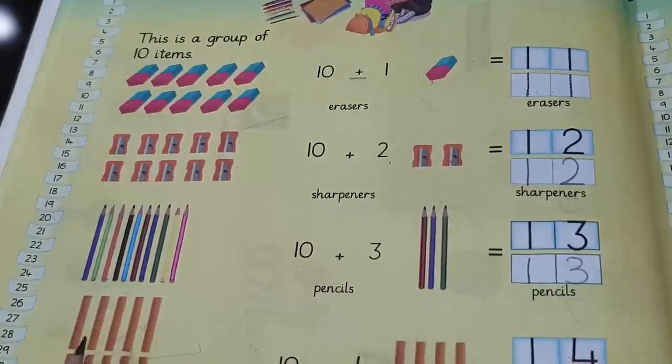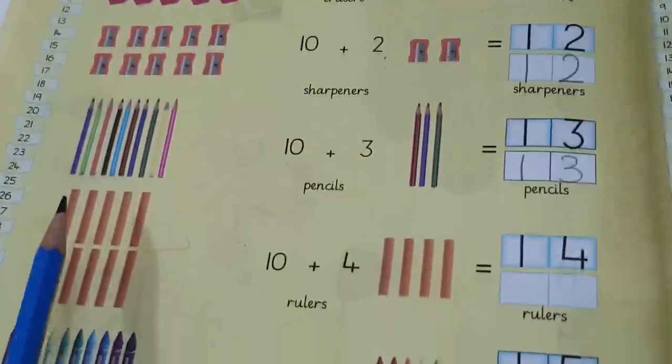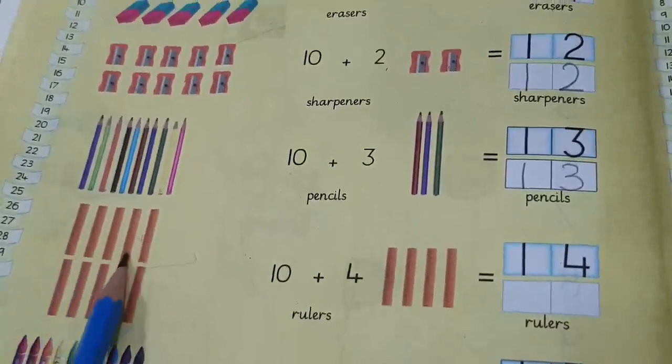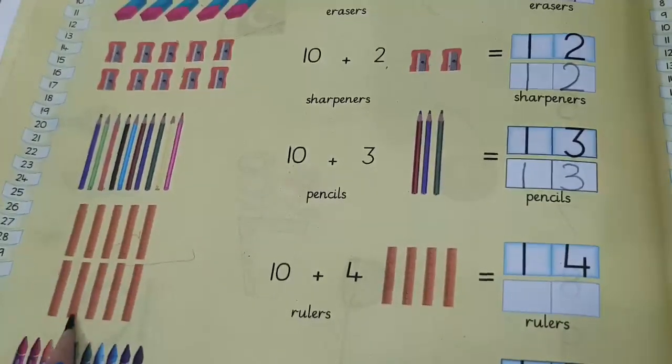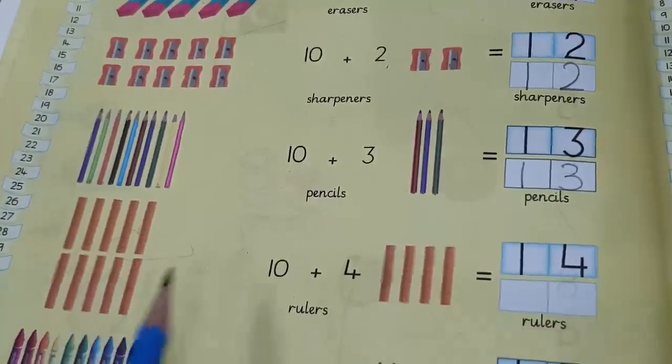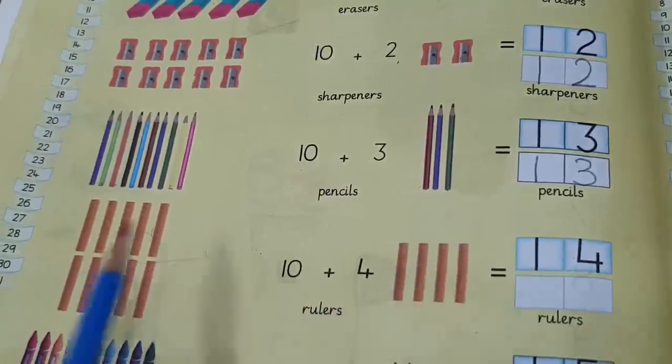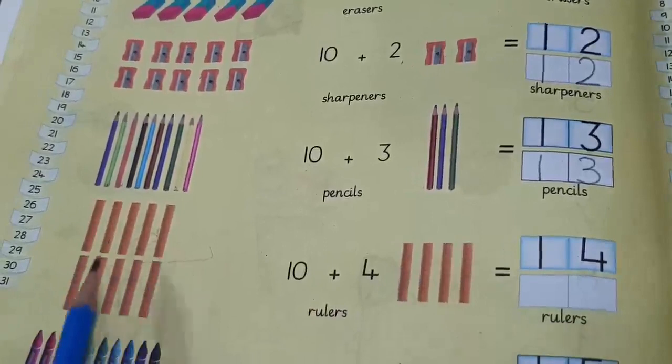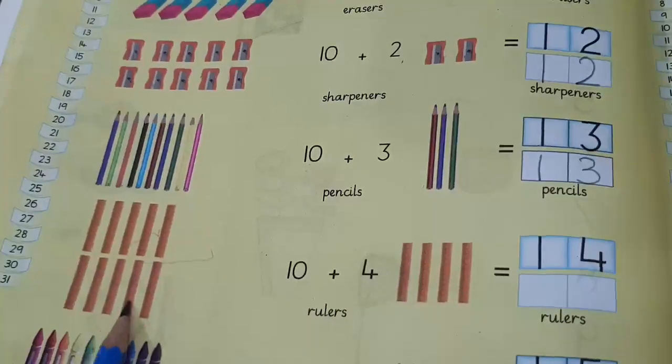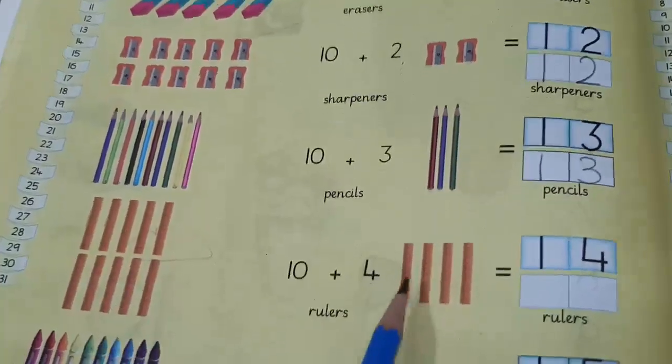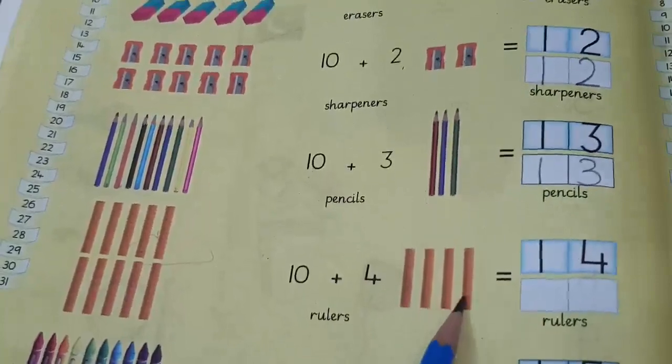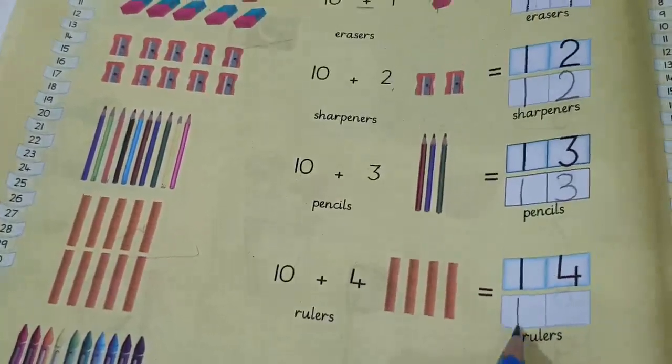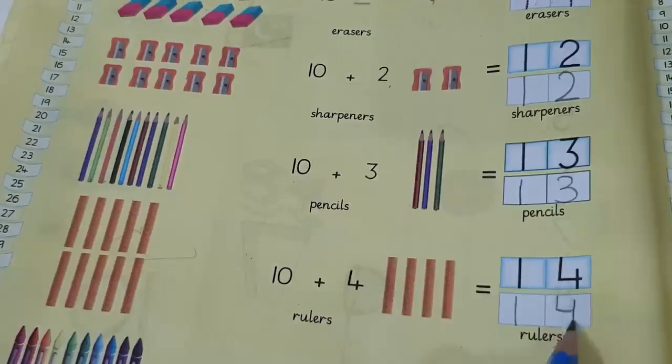Okay, now what are you having? Rulers. How many are there? One, two, three, four, five, six, seven, eight, nine, ten. Now, I'm giving you four more. So, let's count all together. One, two, three, four, five, six, seven, eight, nine, ten, eleven, twelve, thirteen, fourteen. Now, we are having 14 rulers. Write here, 14.